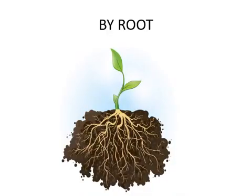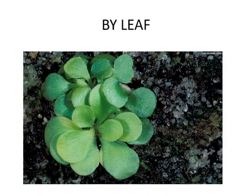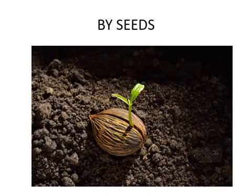First, reproduction by root: a new plant grows through the root. Next, reproduction by stem: a new plant grows through the stem of the plant. If you cut the stem from a plant and place it in moist soil, a new plant will grow. Next, reproduction by leaf: in some plants, a new plant grows through the leaf only. If you place a leaf in moist soil, a new plant will grow.